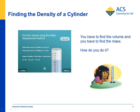Now it's 72 milliliters, or 72 cubic centimeters — we'll call that the final volume. To get the volume of the rod, you subtract the initial volume from the final volume, because the amount of water displaced equals the volume of the rod. So 72 cubic centimeters minus 60 cubic centimeters equals 12 cubic centimeters — that's the volume of the rod.